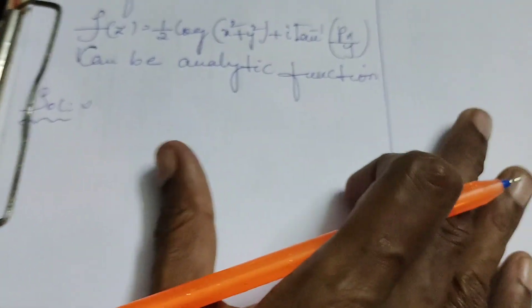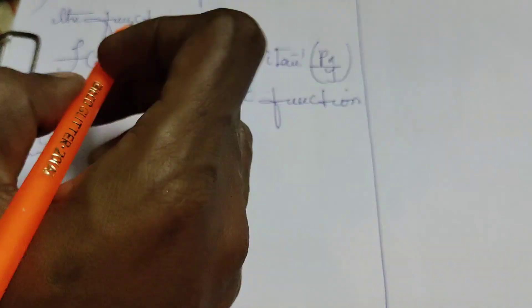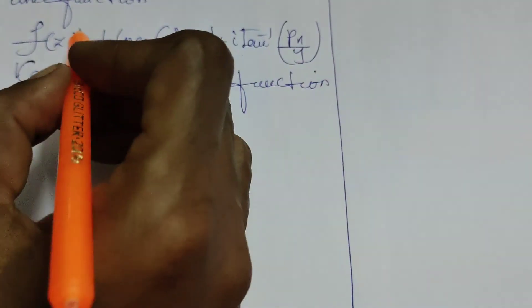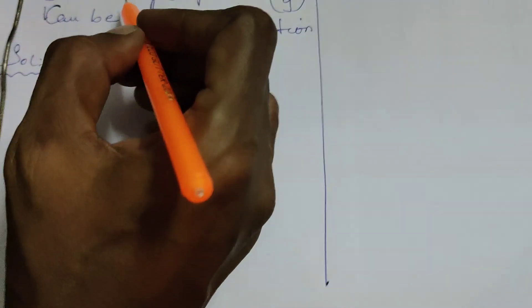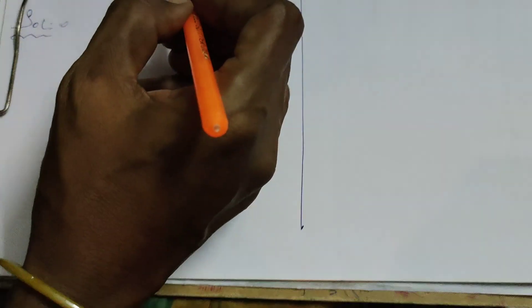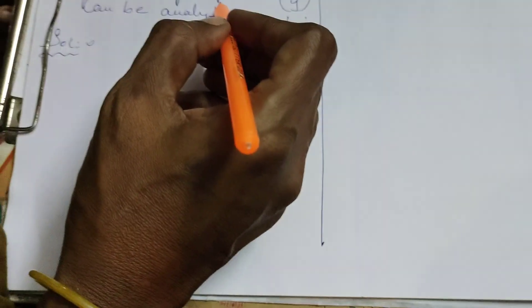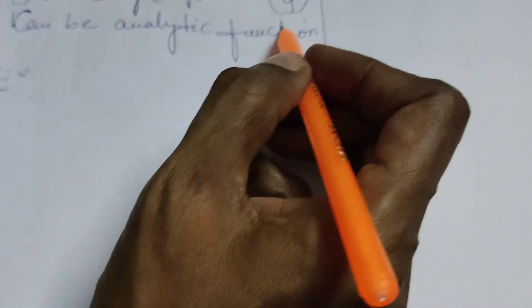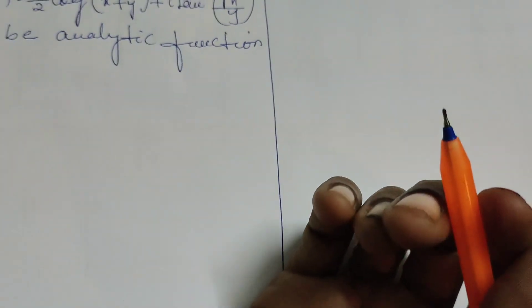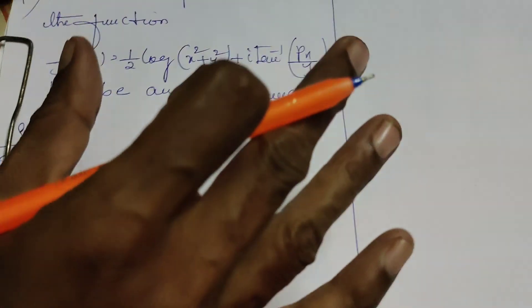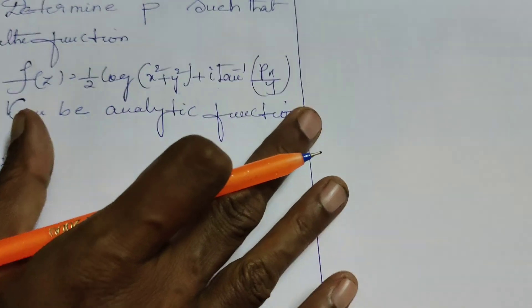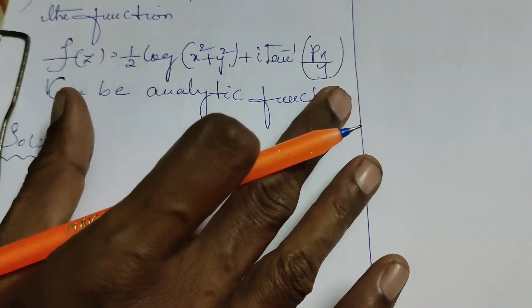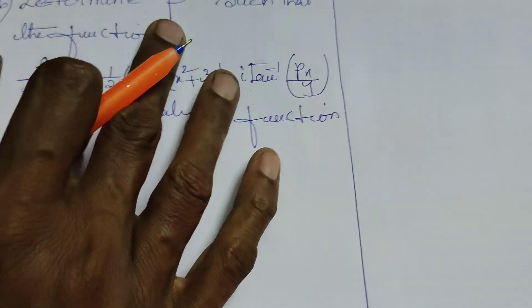Hi everyone, this is Dr. Hirthi. Today we are going to determine P such that the function f(z) = (1/2)log(x² + y²) + i·tan⁻¹(Px/y) can be an analytic function. This is already given as an analytic function, and we need to find the value of P.